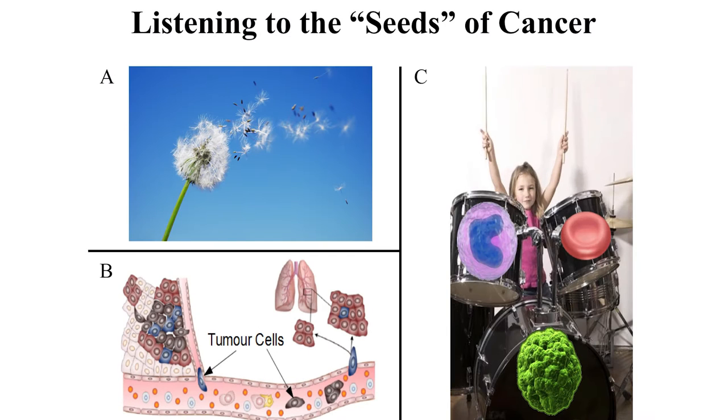Now, I'm a physicist, not a gardener. What does my project have to do with dandelions? It turns out that cancer in the body spreads a lot like a dandelion in a garden. As a tumor grows and develops, it begins to shed cancer seeds into the bloodstream. These seeds are transported throughout the body where they can come to rest in distant organs and grow into new tumors — a process known as metastasis.